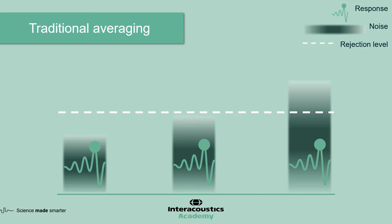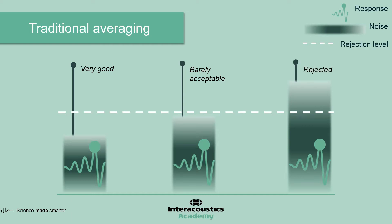In this example, three individual sweeps have been measured. The first one is a good quality sweep — low noise — and so it was not rejected. The second sweep, however, has a lot more noise content and is in fact barely acceptable, but still comes under the rejection threshold so is accepted and included towards the overall averaged waveform. The third sweep has a lot more noise and has exceeded the rejection level and is not included in the overall waveform.